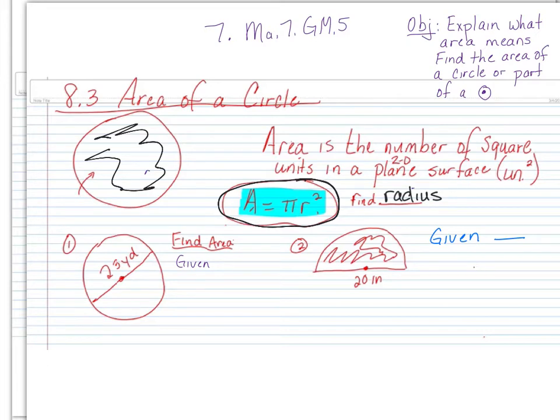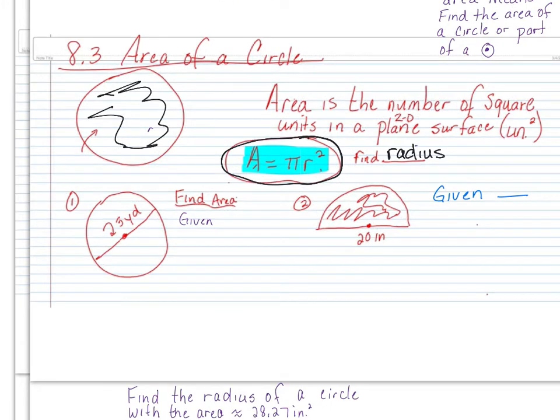Look at number one. It says find the area. First thing I want you to do is tell me what are we given here? What's given to us, Owen? The diameter. What is D? It's 23 yards. How do I find the radius then? What do I do to find the radius, Eric? Divided by 2. Divided by 2.